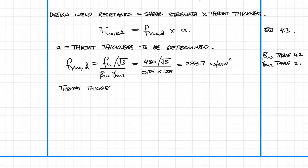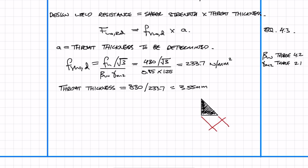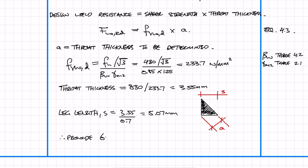To work out the throat thickness all we need to do is take the design force and divide by the shear strength which we just calculated, and that gives us 3.55mm. I mentioned earlier that you don't specify welds by the throat thickness, you specify welds by the leg length. To calculate the leg length all you need to do is divide the throat thickness by 0.7, which in this case gives 5.07mm, so we'll round up to 6mm.